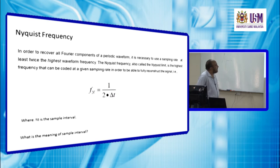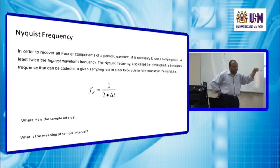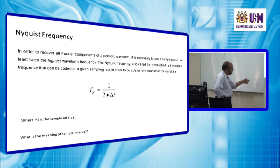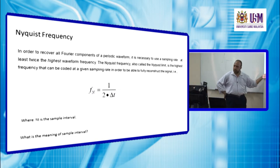The relation is here: f_Nyquist equals one divided by two times delta t, where delta t is the sample interval. And here we have a small question, and in future lectures I will put some questions that can be for training and maybe be part of the final exam or the test. So we should take care and should try to answer these questions.